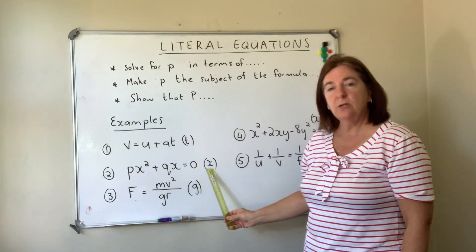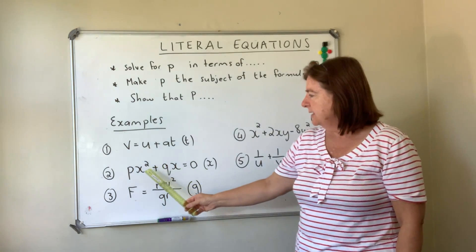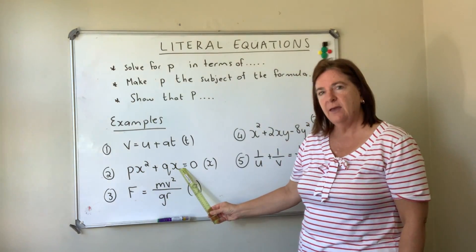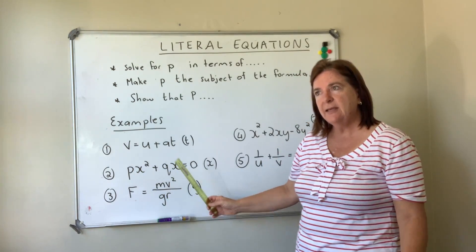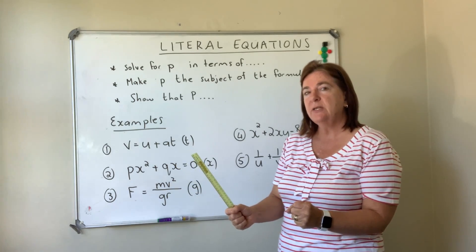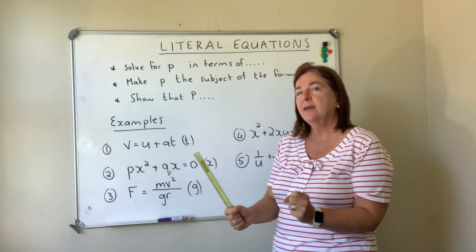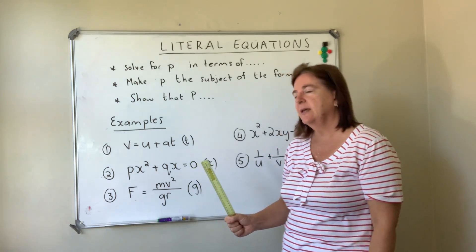With number two, we're going to solve for x. Now you'll see x is in two different places, x is there and there. So the way that we would get x in one place in order to solve it is we would factorize, we would take out the common x.